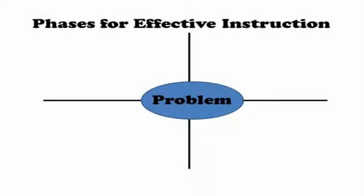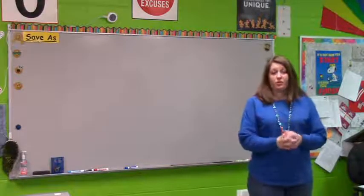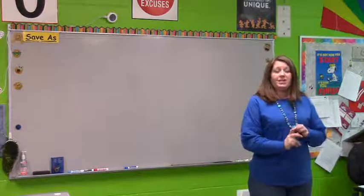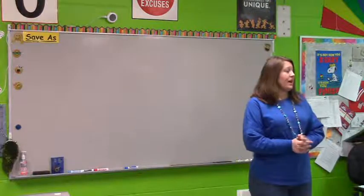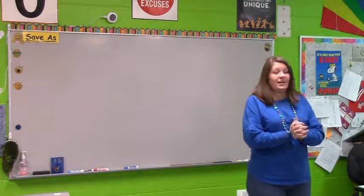Merrill first states that for effective learning to take place, the task must be centered on a real-world problem or task, and that the tasks range from simple to complex. This is when the instructor identifies the overall goal of learning. Your task for today is to design a roller coaster — a fully-functioning roller coaster that has loops and employs motion and kinetic energy.